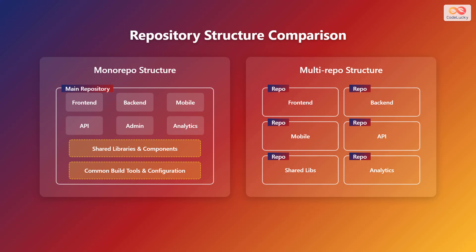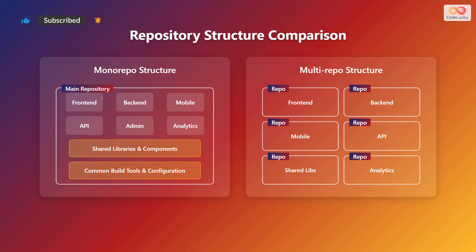Let's visualize the structure of each approach. On the left, we have a monorepo structure. All projects — such as front-end, back-end, mobile API, admin, and analytics — reside within a single main repository. They share common libraries, components, build tools, and configuration.